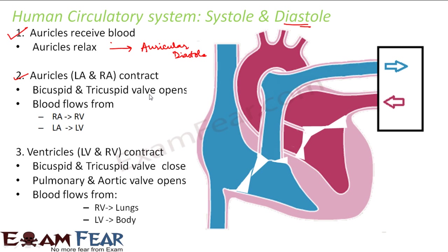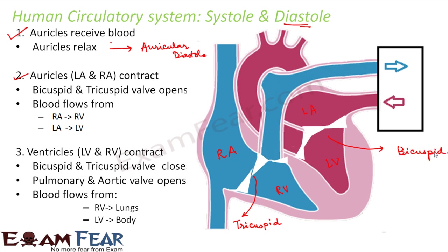When the auricles contract, the bicuspid and tricuspid valves open. Between the right auricle and right ventricle we have the tricuspid valve — we remember this as RTR. Between the left auricle and left ventricle we have the bicuspid valve. Once both auricles are filled with blood, the tricuspid valve and the bicuspid valve open.